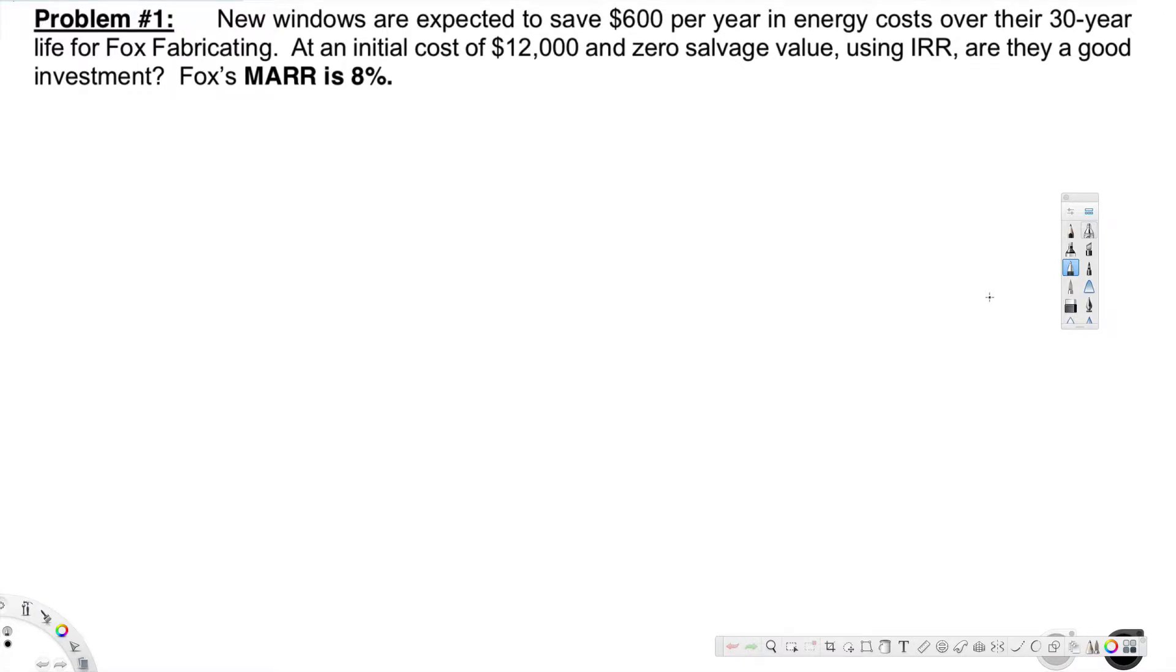Let's look at this problem right here. The question is asking: new windows are expected to save $600 per year in energy costs over their 30-year life for Fox Fabricating. At an initial cost of $12,000 and zero salvage value, using IRR, are they a good investment? Fox's MARR is 8%.